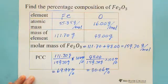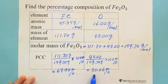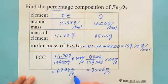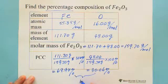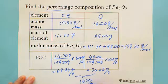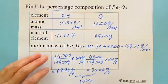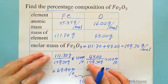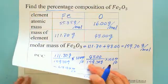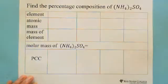If you add these two — 69.94 plus 30.06 — you get a total of 100%. So this is the first example.